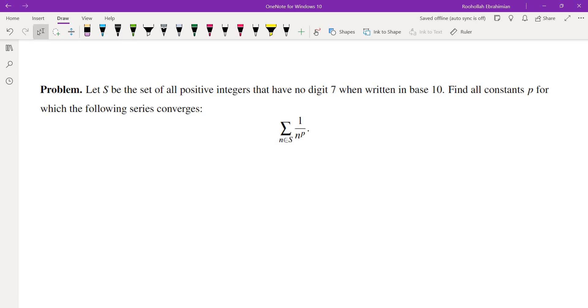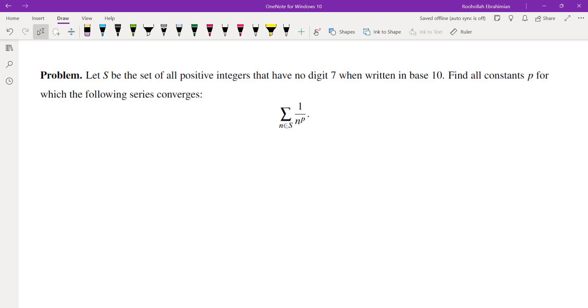Now I would suggest that you work on this problem, which is something similar to the problem that we discussed, except that it's asking us to find all P for which the sum of 1 over N to the P when N is in S, where S is the exact same set that we just talked about, converges. So for what values of constant P does this series converge and for what values does this series diverge?